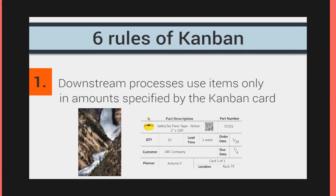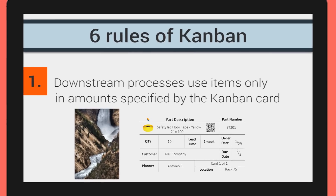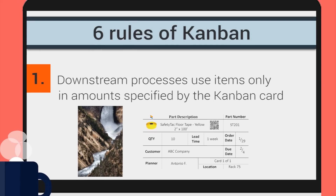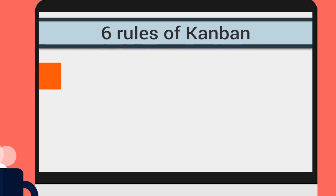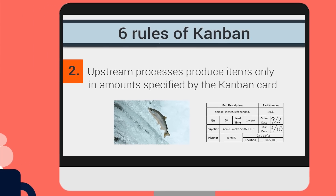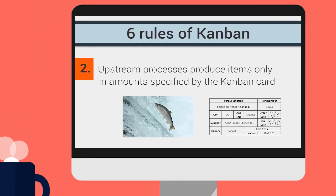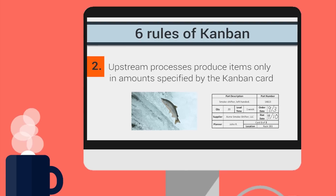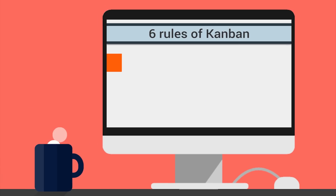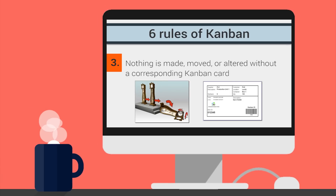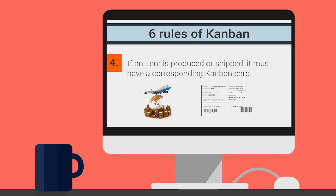Downstream processes use items only in amounts specified by the Kanban card. Upstream processes produce items only in amounts specified by the Kanban card. Nothing is made, moved, or altered without a corresponding Kanban card. If an item is produced or shipped, it must have a corresponding Kanban card.